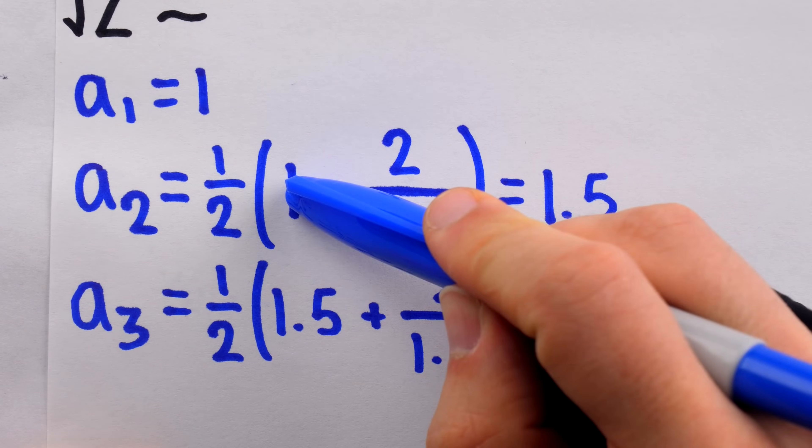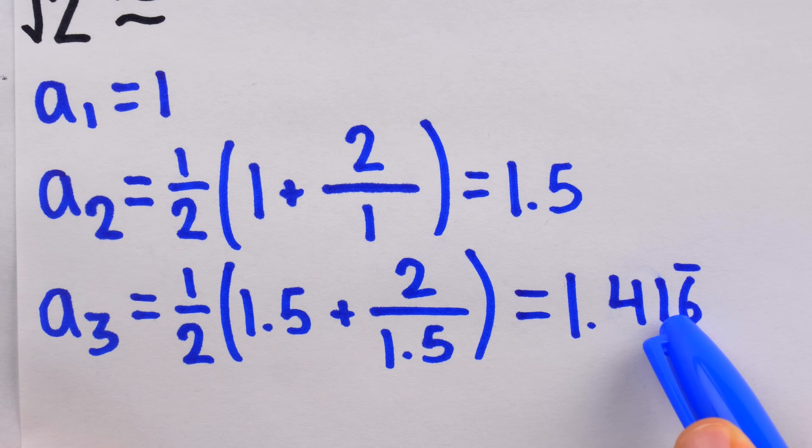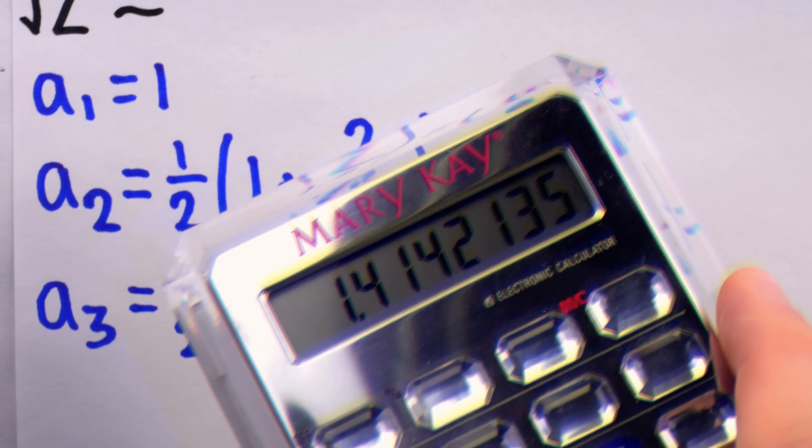This turns out to be 1.416 repeating. So, our approximation, after only 2 calculations, already has the first 3 digits correct. You can look back at our calculator to verify.